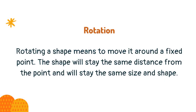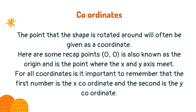Rotating a shape means to move it around a fixed point. The shape will stay the same distance from the point and will stay the same size and shape. The point that the shape is rotated around will often be given as a coordinate.